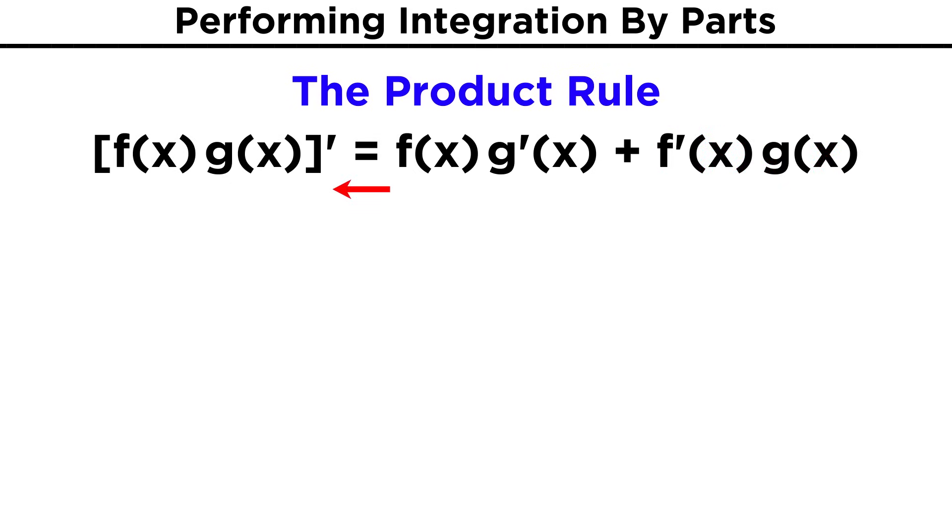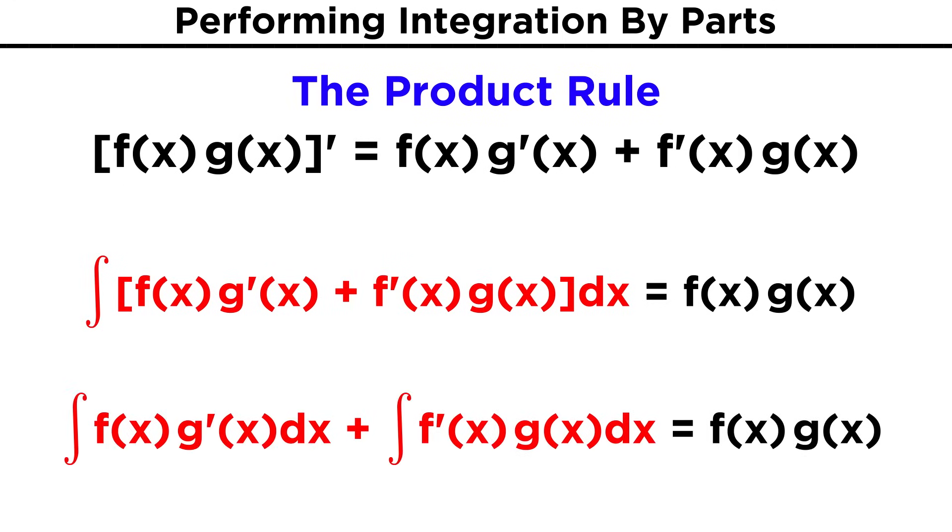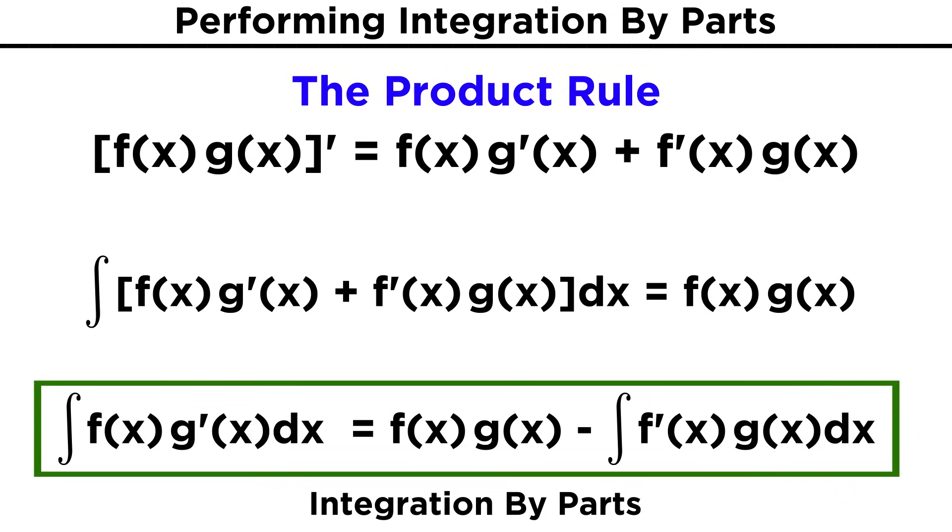Well we know that we can always go backwards by integrating, so the integral of this derivative must be the product of the two functions that we started with. Now let's work with this expression a little bit to get something more useful. We know that the integral of a sum is equal to the sum of integrals, so let's split this integral up into two separate ones, and then let's bring the second integral over to the other side of the equation by subtraction.